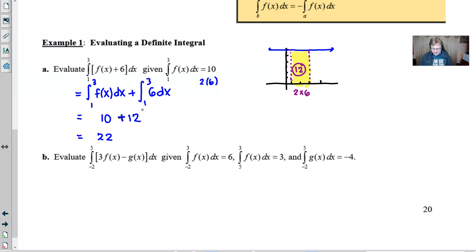Part b is a little bit more involved. This time you want to evaluate from negative two to five three f of x minus g of x. And you're given lots of information here. A couple of integrals about f and a single integral about g. The integral about f travels from negative two to three and is six. The integral next is from five lower bound to three upper bound of f of x which is three. And then lastly you have an integration of g of x from negative two to five which is negative four.